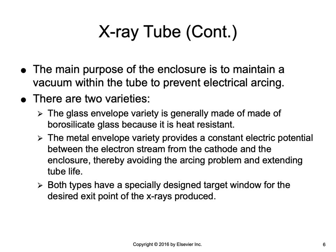Both enclosure types have a specially designed target window for the exit point of the x-ray photons that are produced. The target window is fashioned to minimally interfere with or absorb the x-rays. It is usually about five centimeters square and is at a place on the enclosure that has been made thinner than the rest, reducing the amount of absorption by either the metal or glass enclosure.